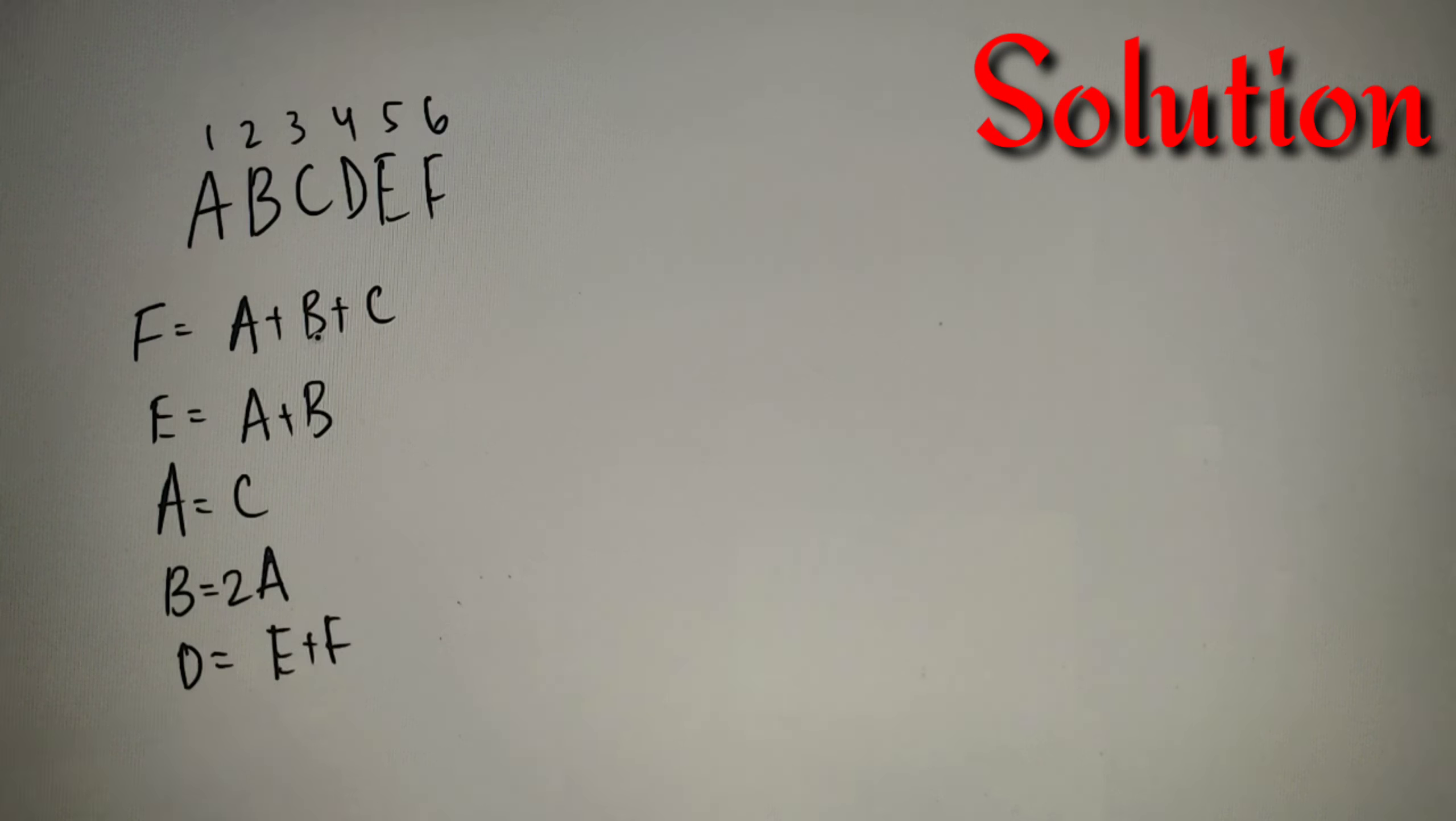So now we have written all our assumptions and we have got all the values. Now we have to maximize the fourth digit, that is D. To find the maximum value of D, we'll use the first four equations and then substitute the final value in the fifth equation to find the maximum value of D.